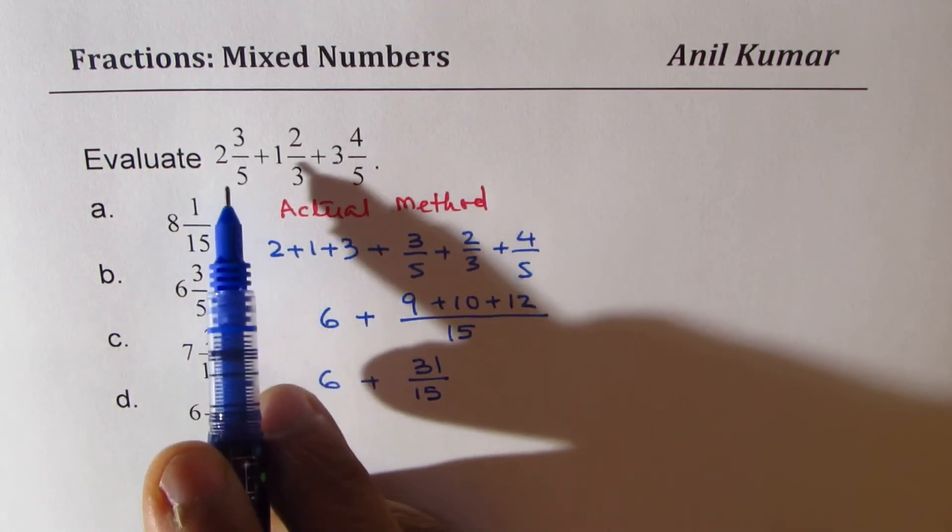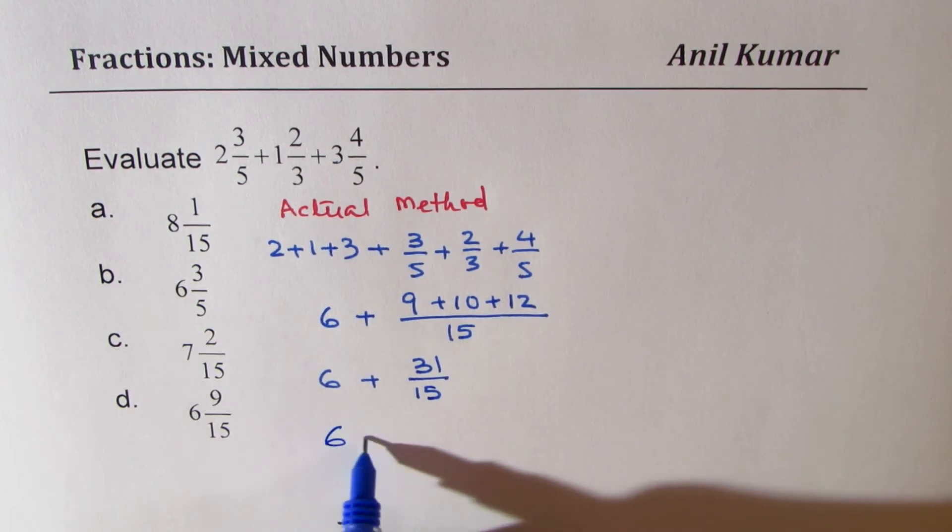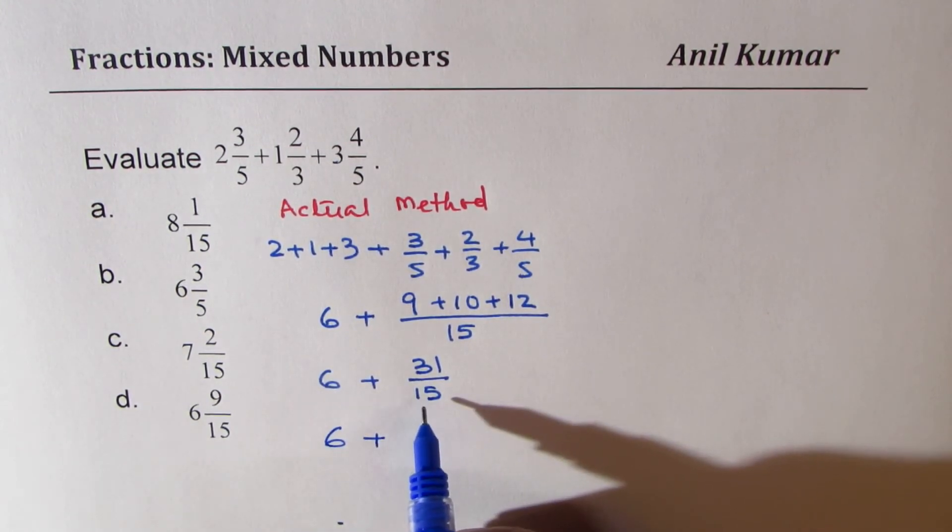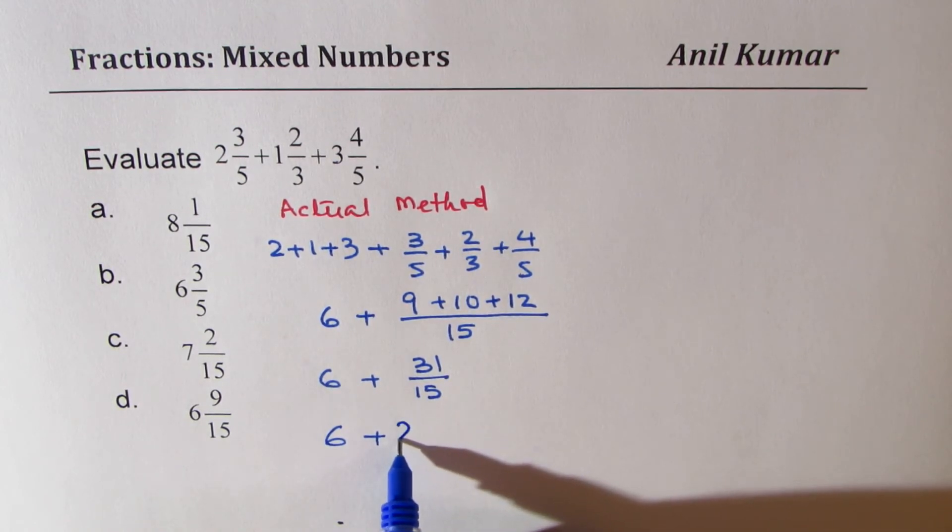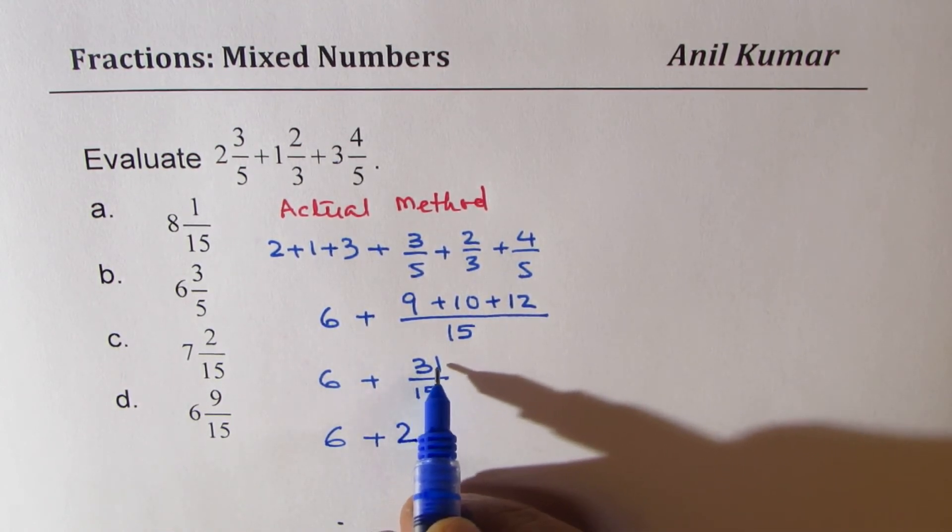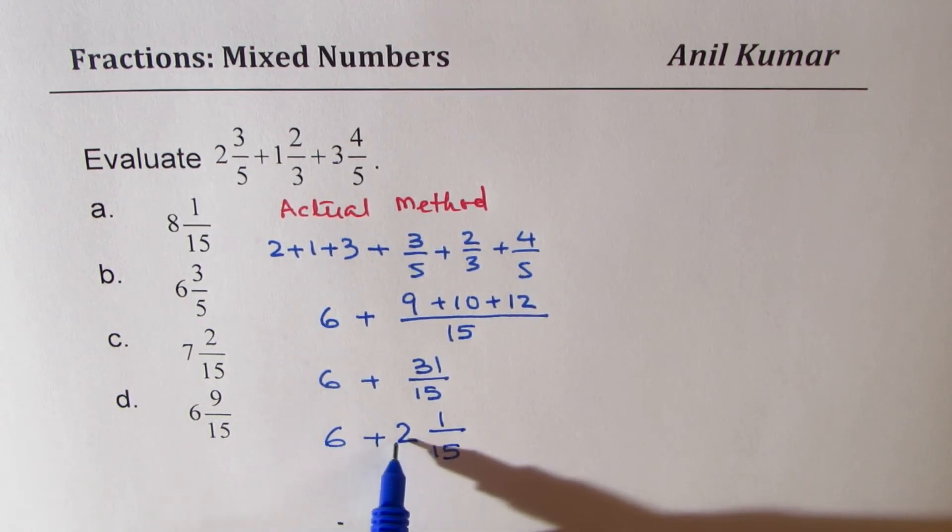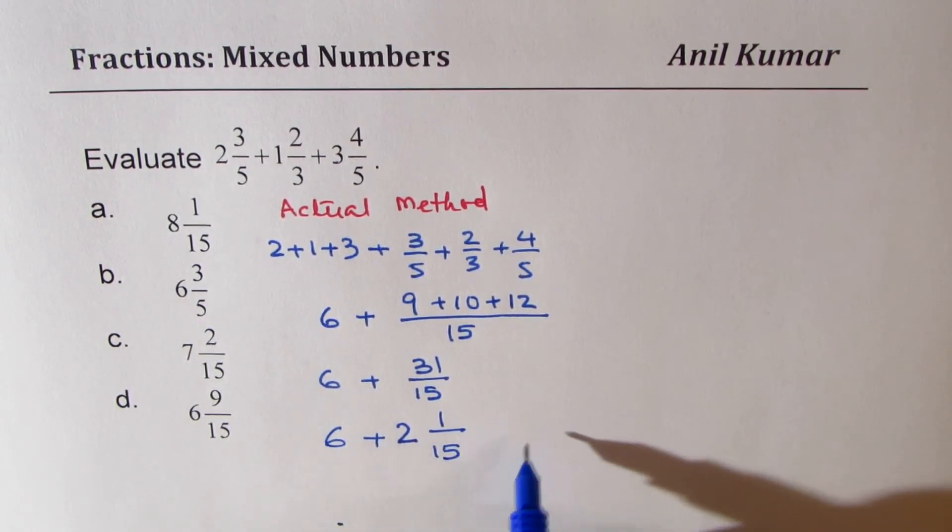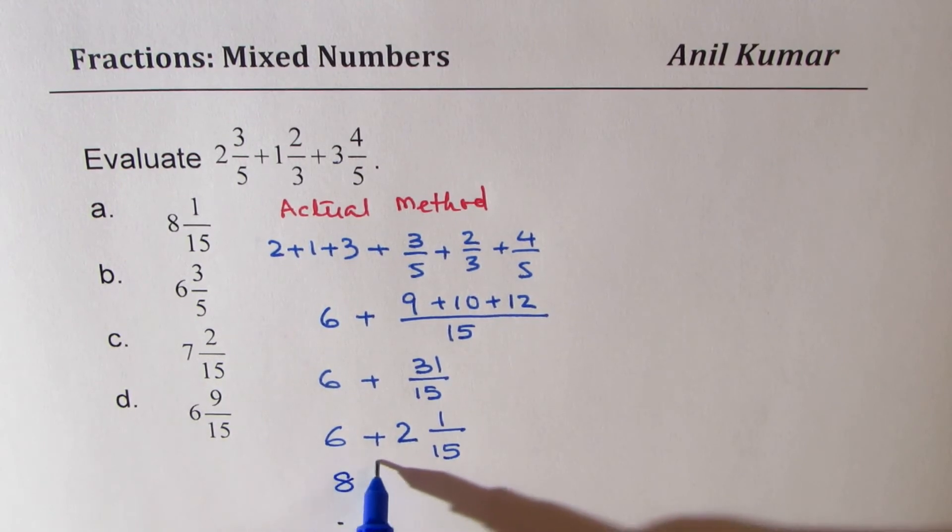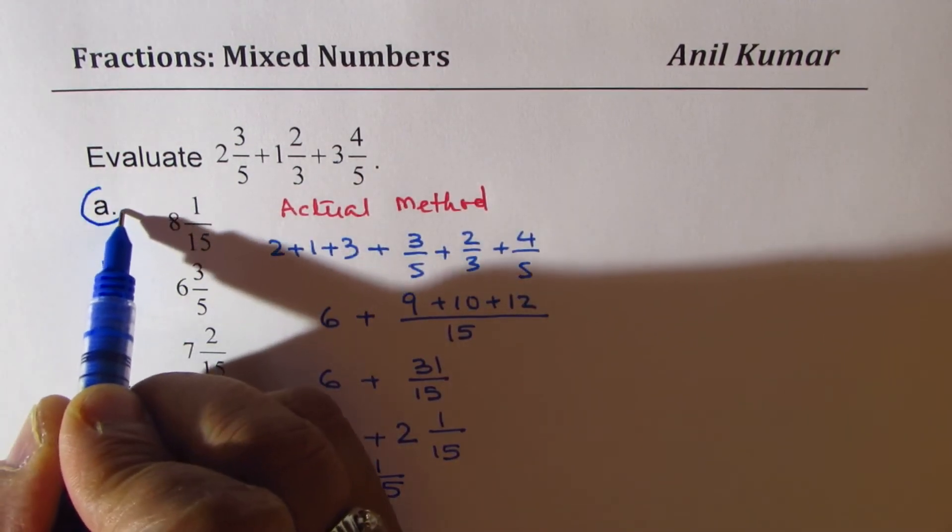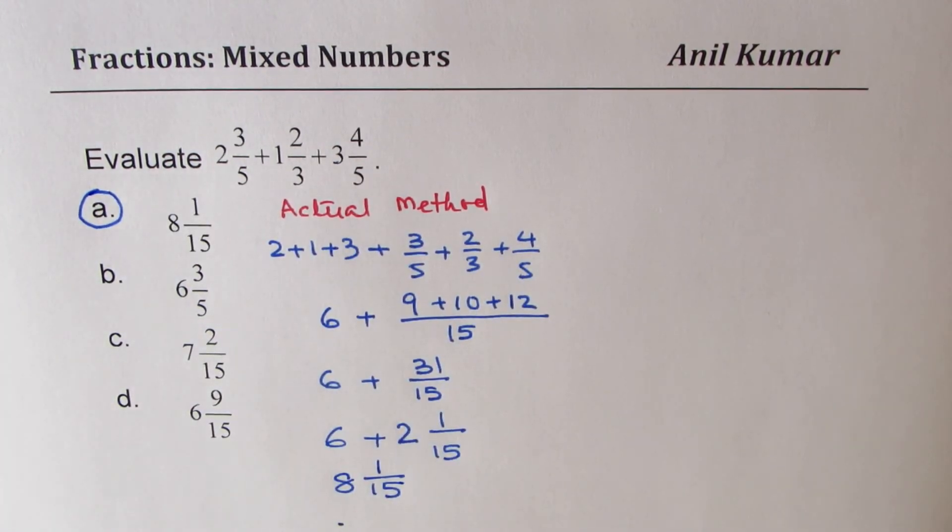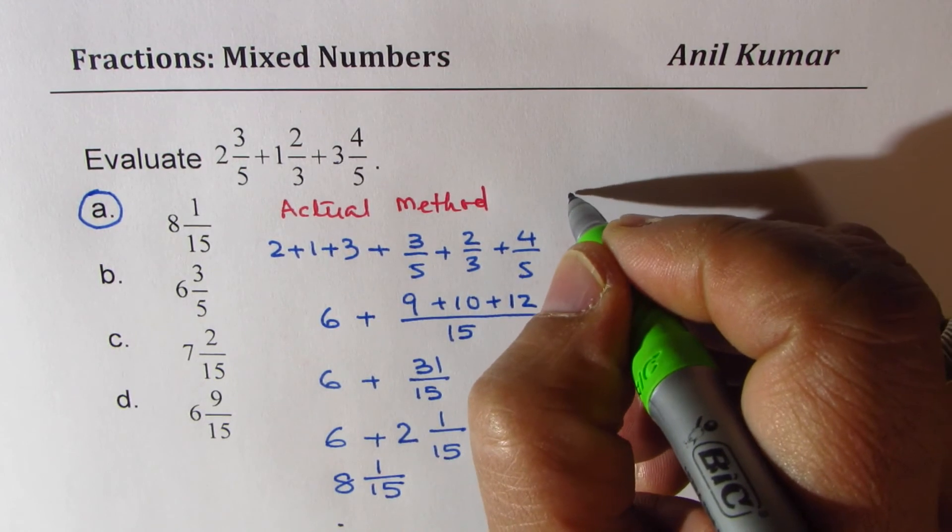Convert it back to the mixed numbers. So we get 6 plus, 15 times 2 is 30, so we write 2 here. You are left with 1, so it is 1 over 15. And 6 plus 2 is 8. So what you get here is 8 and 1/15. So the answer is A. The actual method is not bad. It doesn't really take a lot of time.